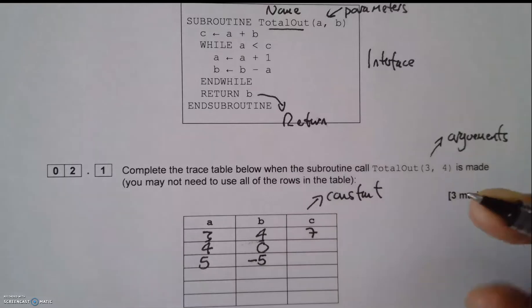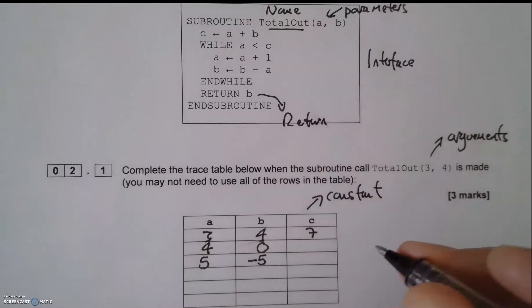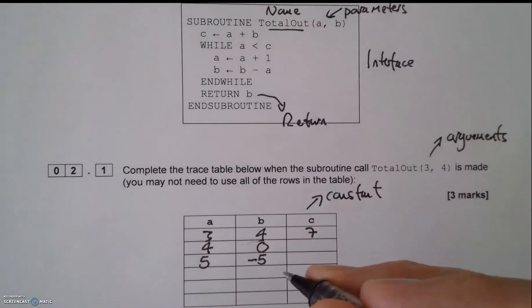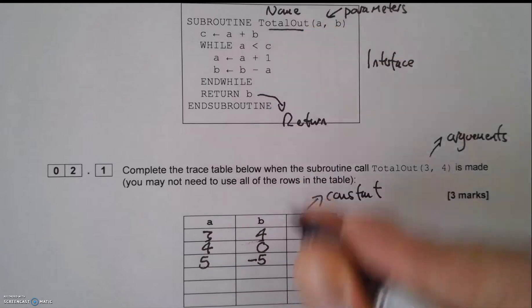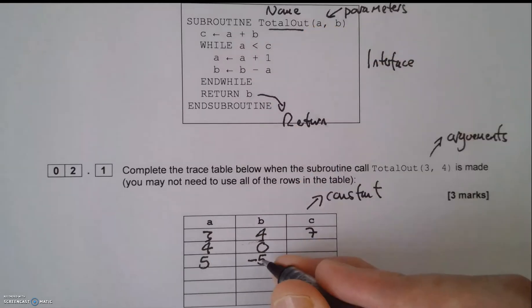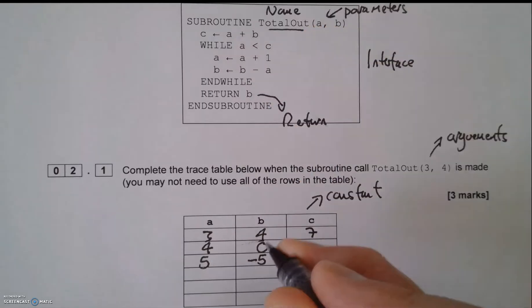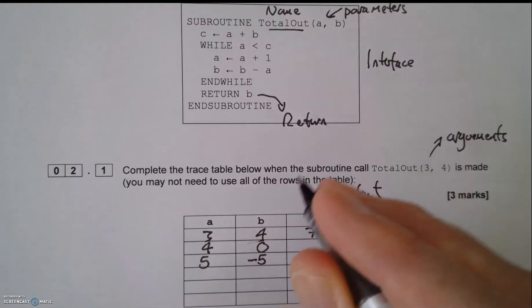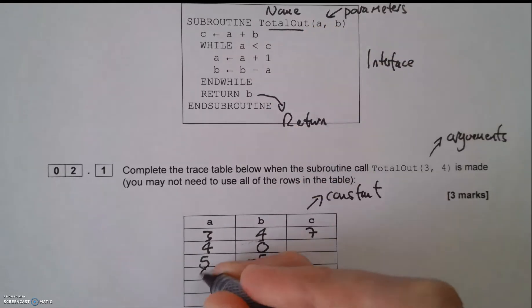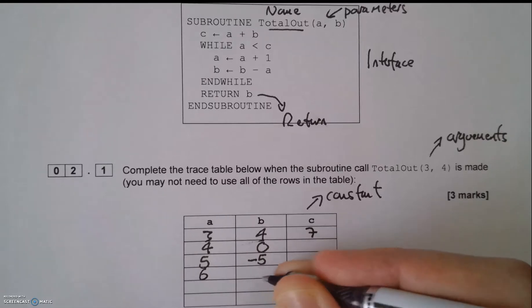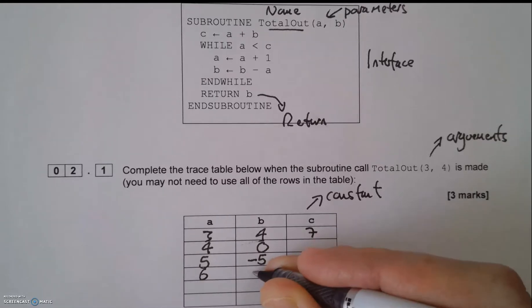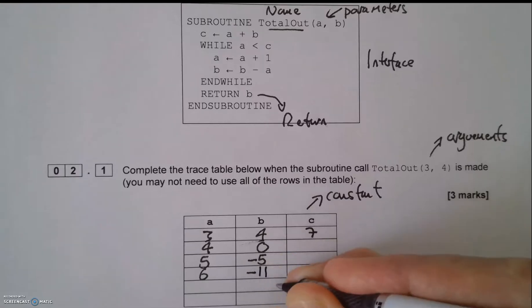Is a less than c? Yes, still is. So a equals a plus 1, that's now 6. Then b equals b minus a — that's going to be negative 11 now.